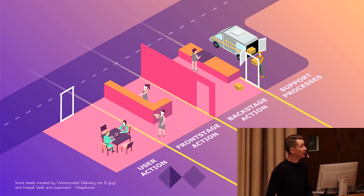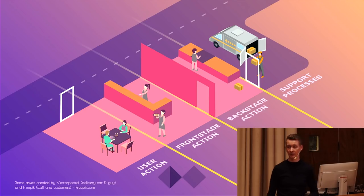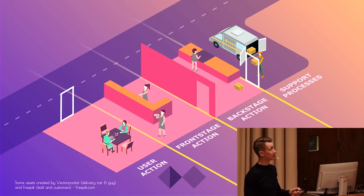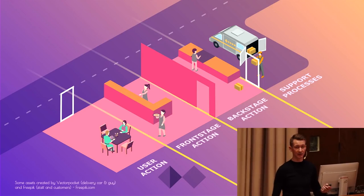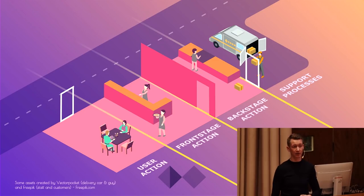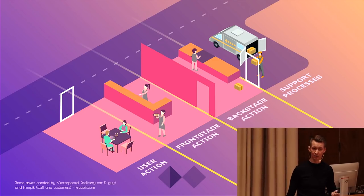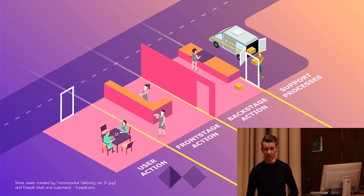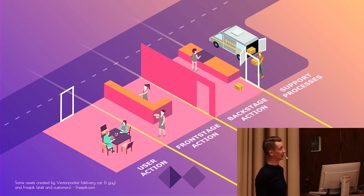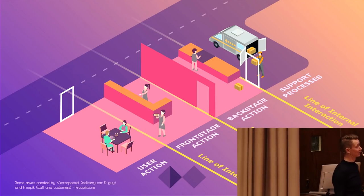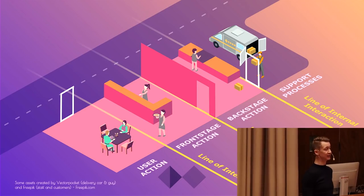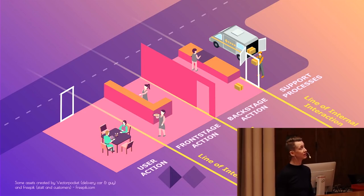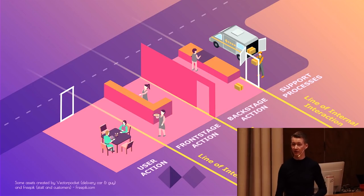You also have to be mindful of the front-stage action — the individuals customers directly interact with, in this case the waiters and waitresses. But the backstage action is equally important for the overall experience: a chef preparing the actual meal will definitely have a big impact on customer experience. And finally, there are support processes — somebody has to deliver all the food items for the chef to prepare. These lines have specific names: the line of interaction, the line of visibility where the user's sight ends, and the line of internal interactions.